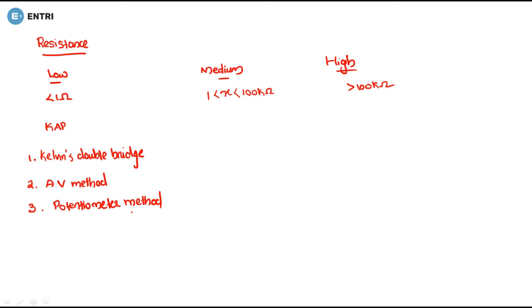For high resistance, the code is LMD. L is for the loss of charge method, M is for the mega ohm bridge, and D is for the direct deflection method.